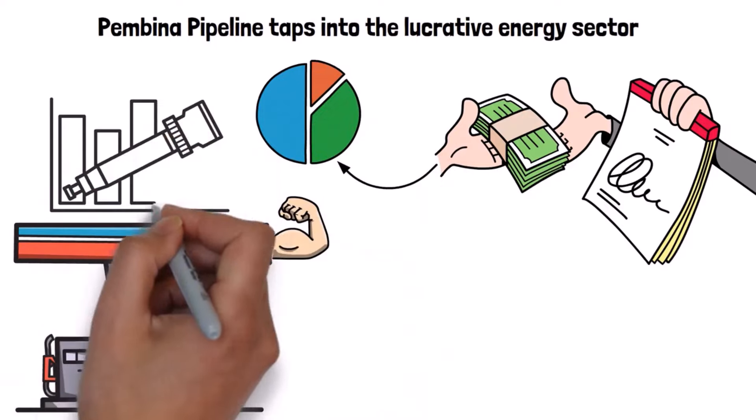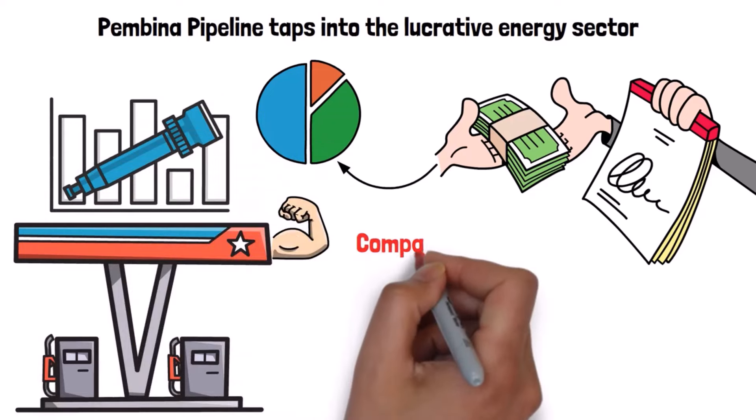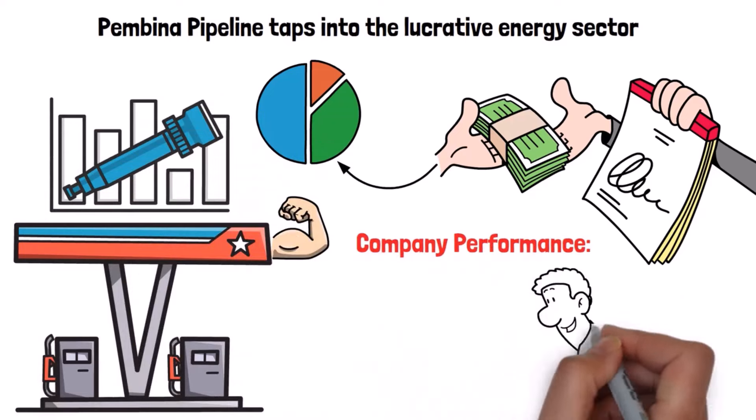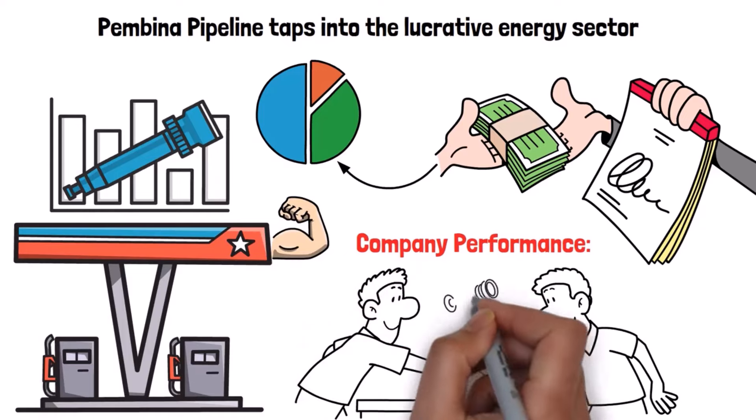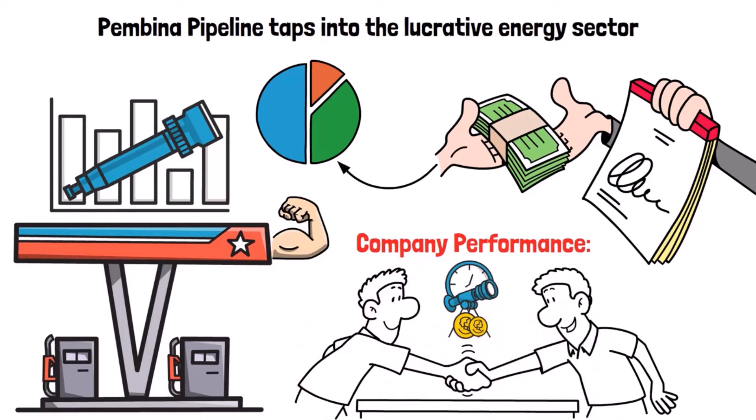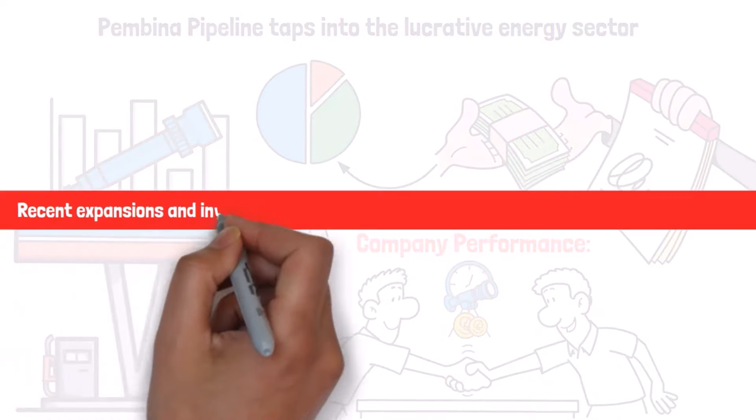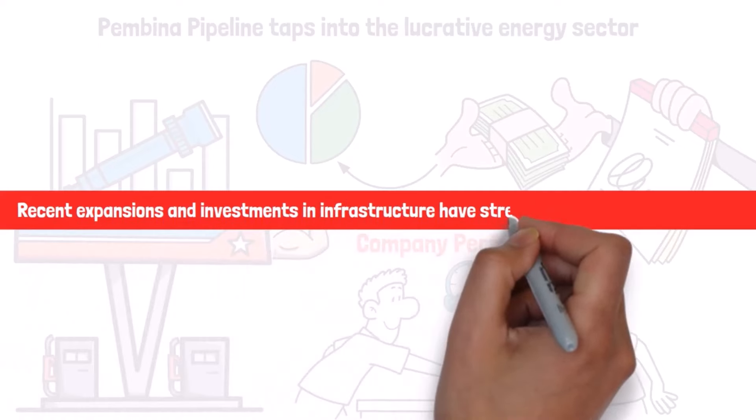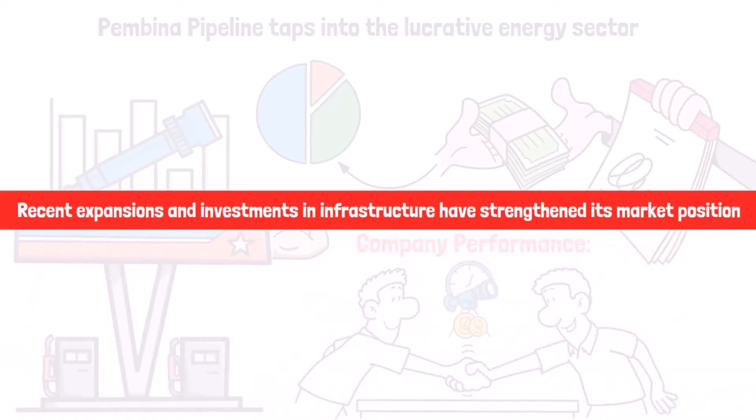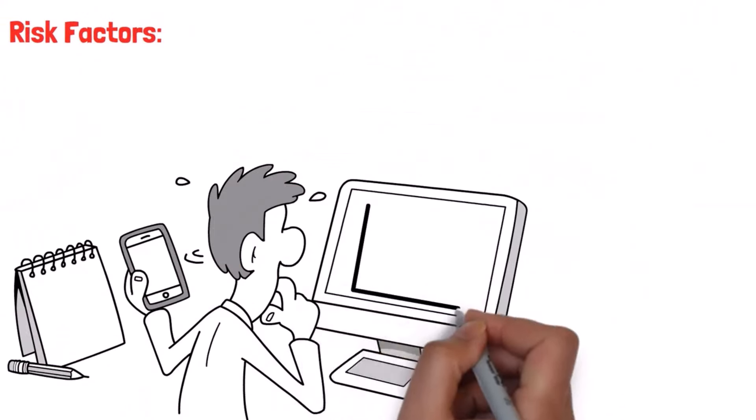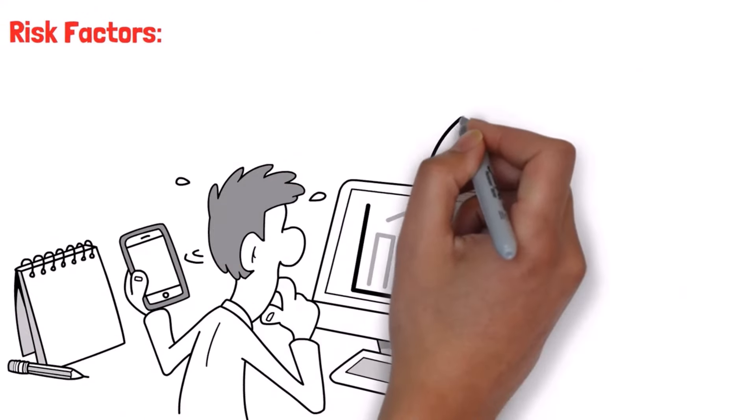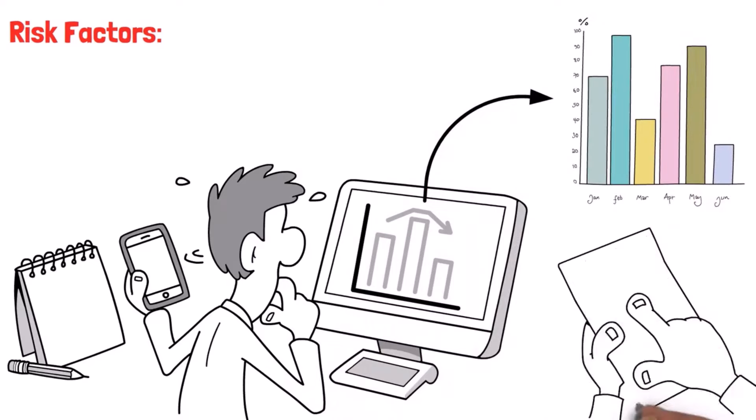Company performance: PBA benefits from long-term contracts with its clients, providing predictable revenue streams. The company's recent expansions and investments in infrastructure have strengthened its market position. Risk factors: PBA's performance can be affected by fluctuations in energy prices and regulatory changes in the energy sector.